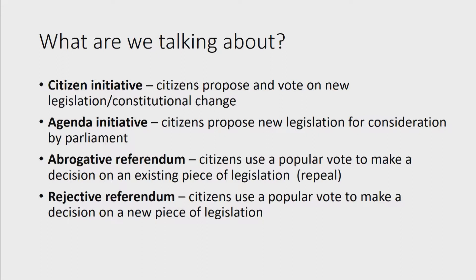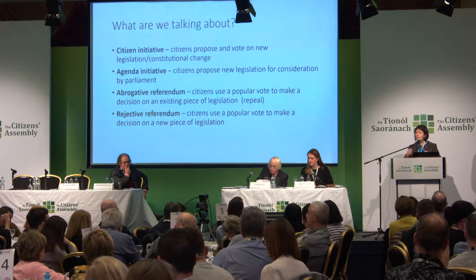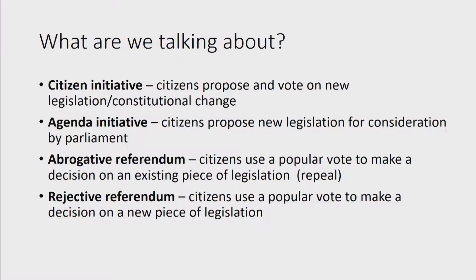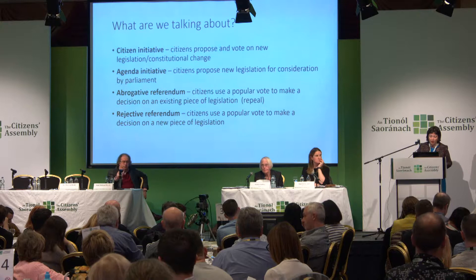An agenda initiative is a more limited form. Citizens can propose a piece of legislation for consideration by parliament — they collect signatures and trigger the decision, but it passes to parliament to decide, and there's no public vote on the issue. There are also two types of referendums that fall into this broader initiative classification, best understood as veto tools. In an abrogative referendum, citizens can have a popular vote to repeal an existing piece of legislation. A rejective referendum happens when there's a popular vote on a new piece of legislation that has just been passed by parliament, within which citizens can trigger this veto mechanism.